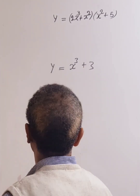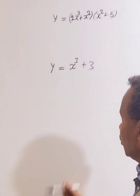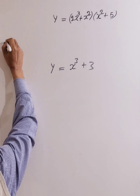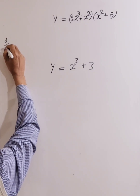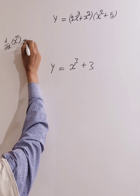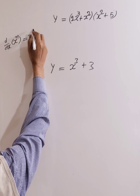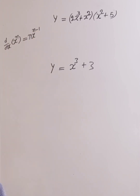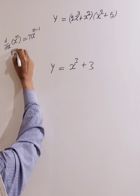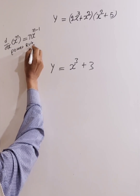To differentiate this one, we need to use the power rule, which states the derivative of x to the power n with respect to x is equal to n times x to the power n minus 1. This is the power rule.